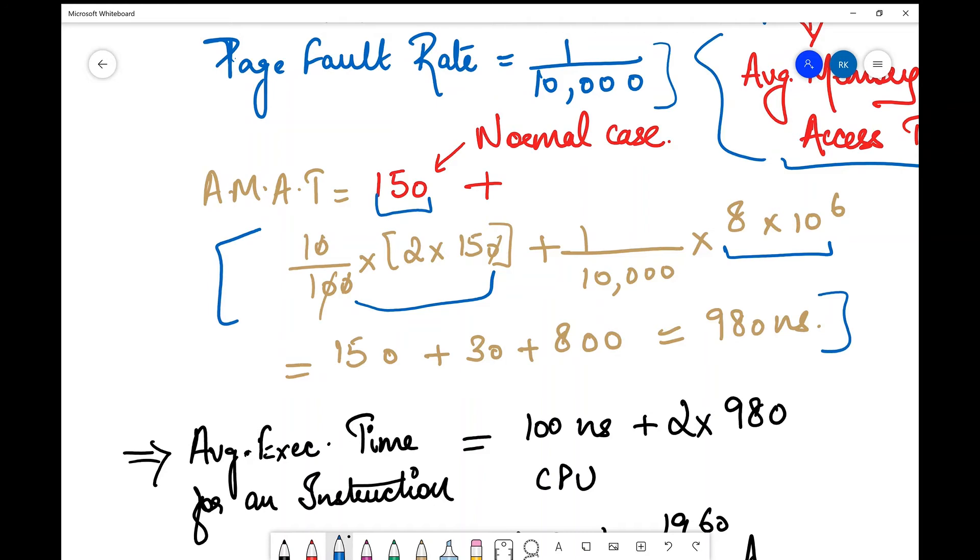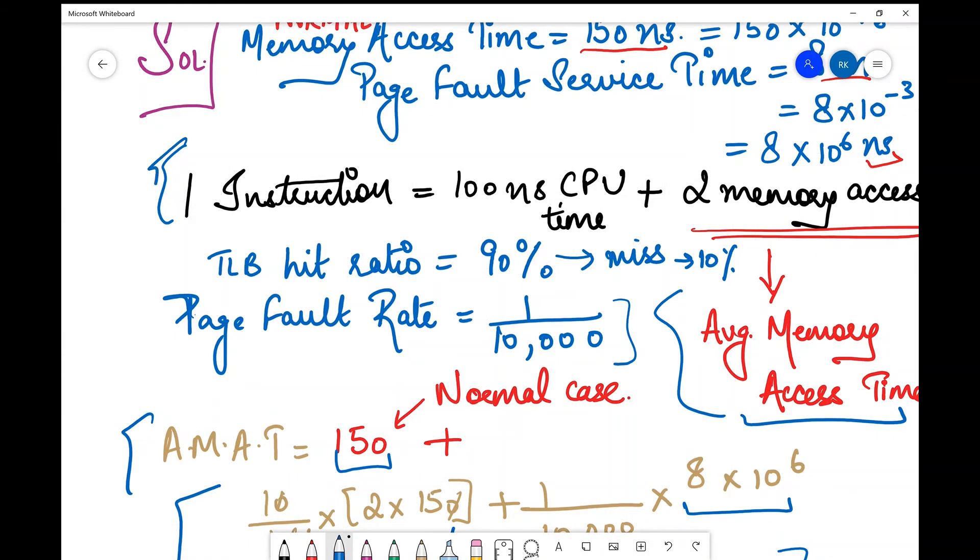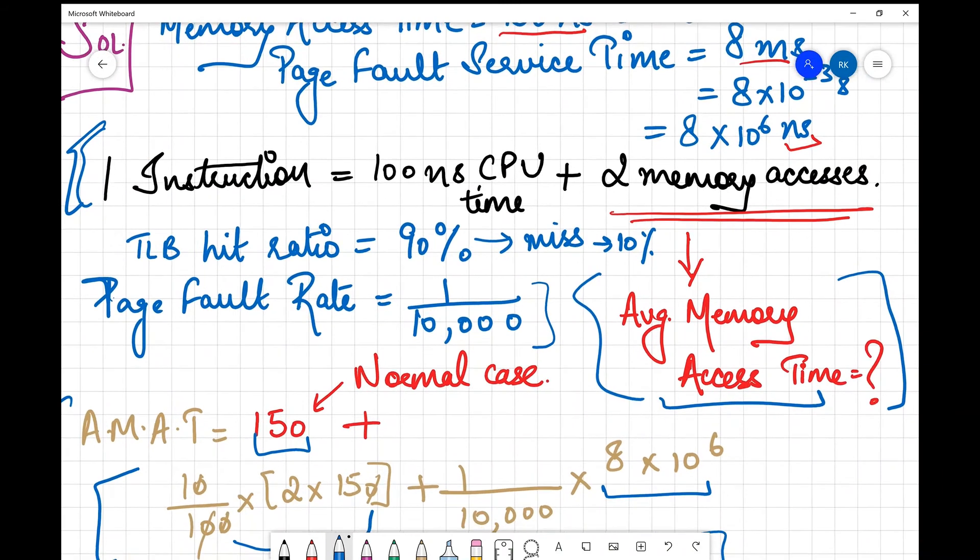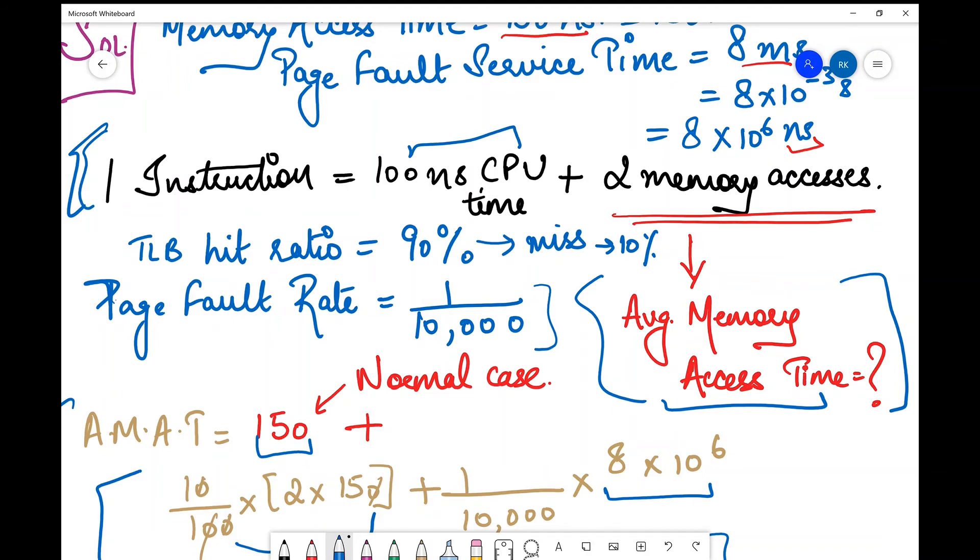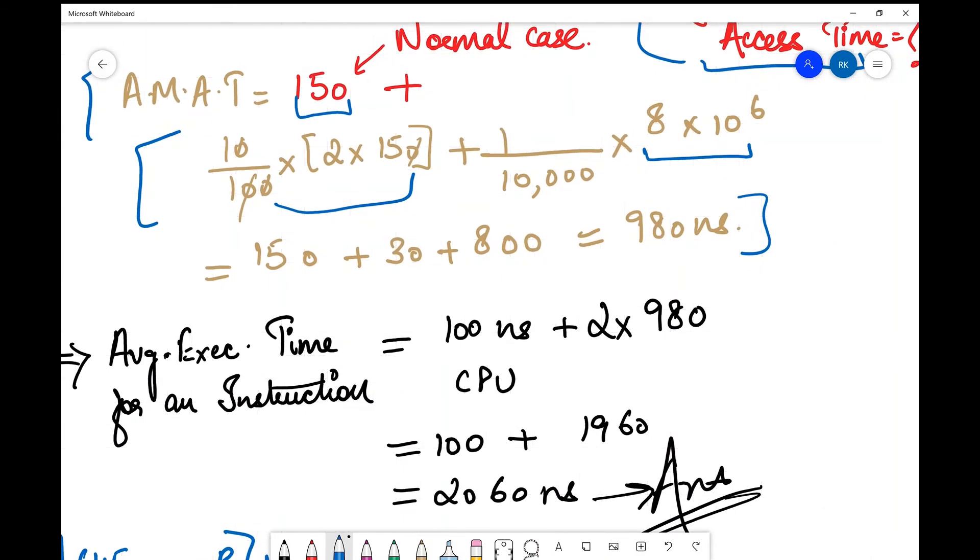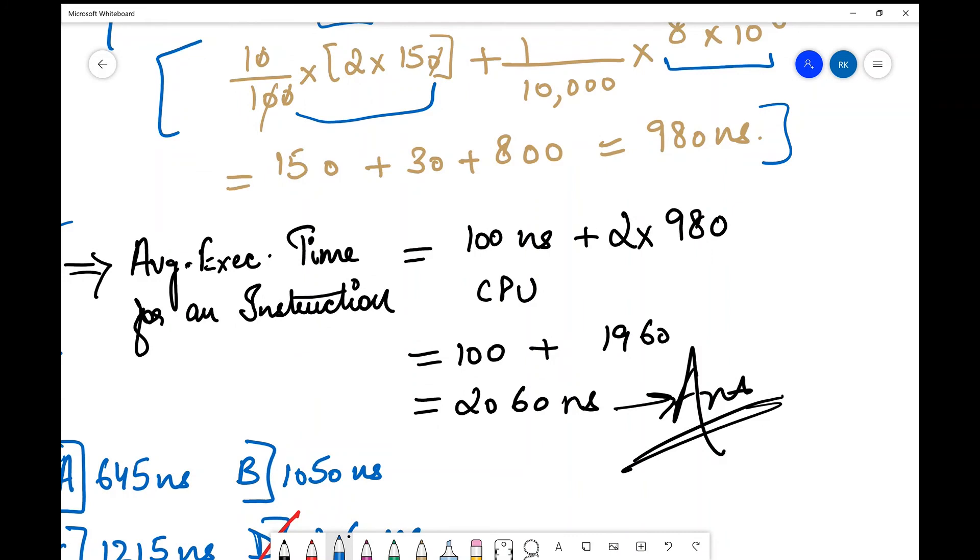When you simplify this entire thing, it comes out to 980 nanoseconds. Once we have this average memory access time, we need to find average execution time for an instruction. One instruction takes 100 nanoseconds of CPU time plus twice into memory accesses. I substitute the average memory access time: 100 nanoseconds plus twice into 980, which simplifies to 2060 nanoseconds.